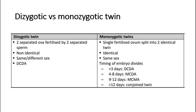For dizygotic twins, DCDA — dichorionic diamniotic — means there are two placentas and two amniotic cavities. For monozygotic twins, it depends on the timing when the embryo divides. It can be dichorionic diamniotic, monochorionic diamniotic (where the two fetuses share the same placenta but have two amniotic cavities), or monochorionic monoamniotic (where they share the same placenta and the same amniotic cavity).